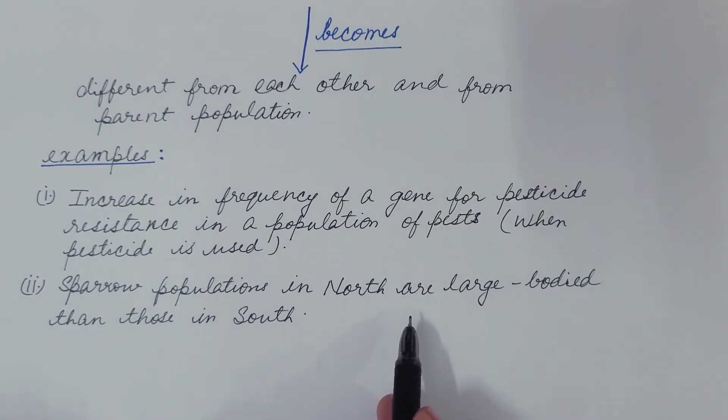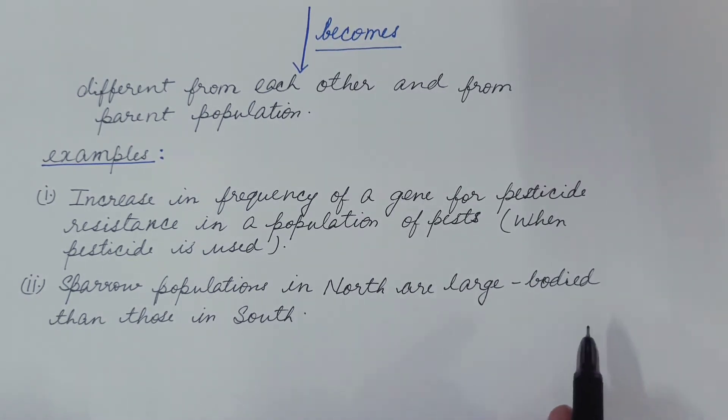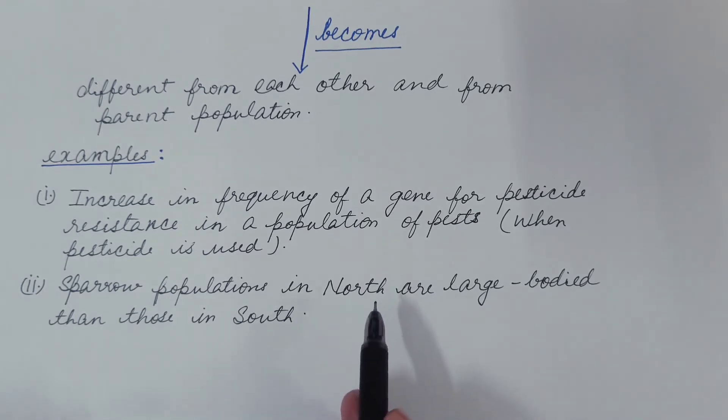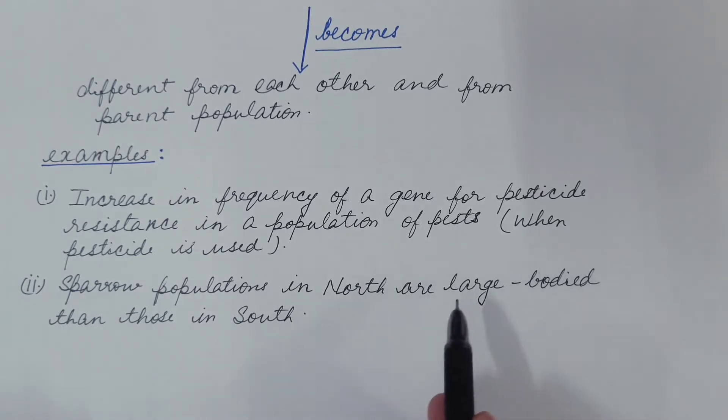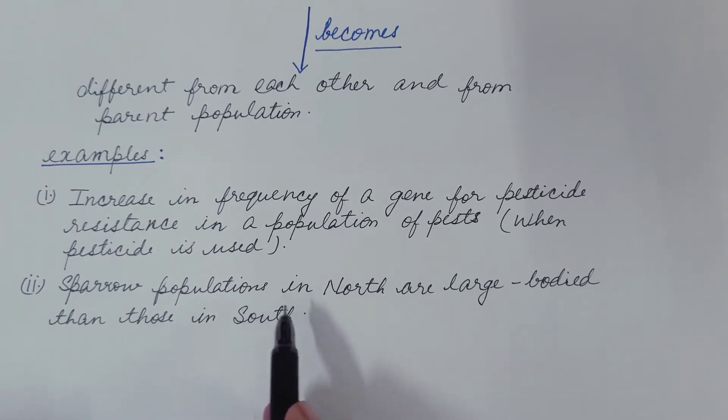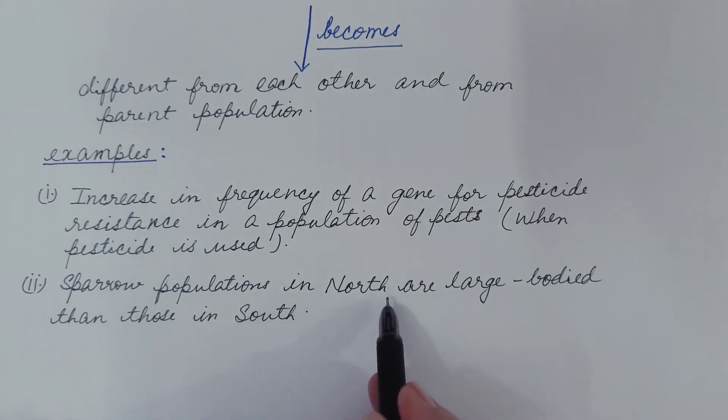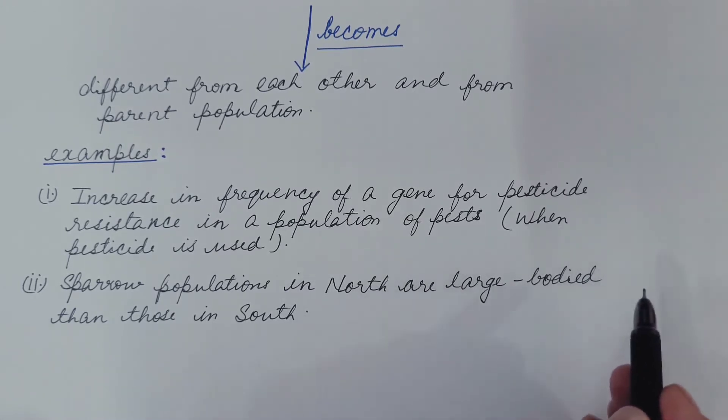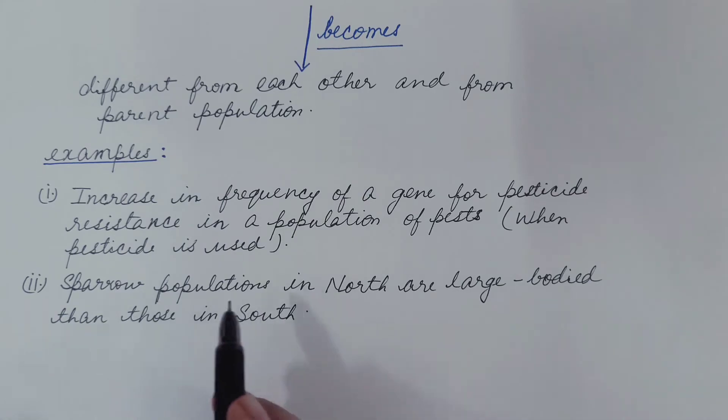Large bodied sparrows can survive in the lower temperature better compared to the small bodied sparrows. So large bodied sparrows were selected in the colder weather of the north. Similarly smaller bodied sparrows were selected in the comparatively warmer weather of south. Hence sparrow populations of north are large bodied compared to those in south.